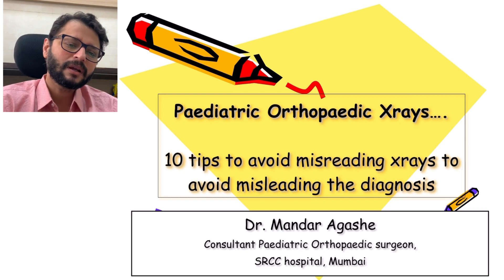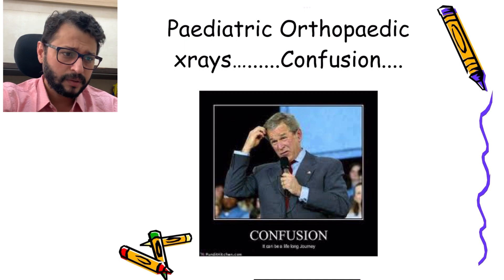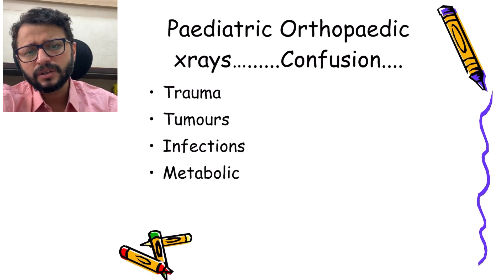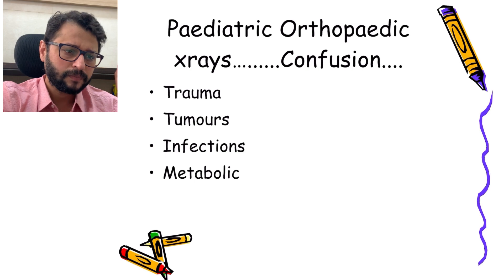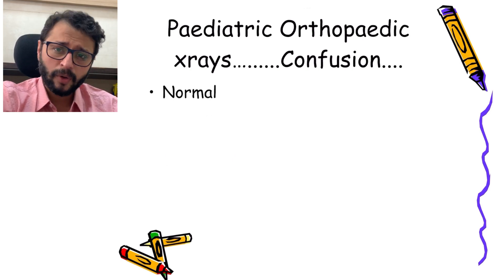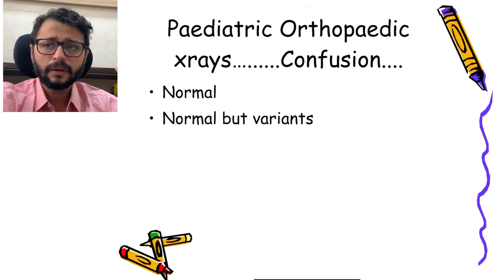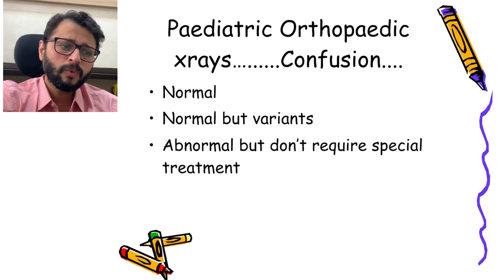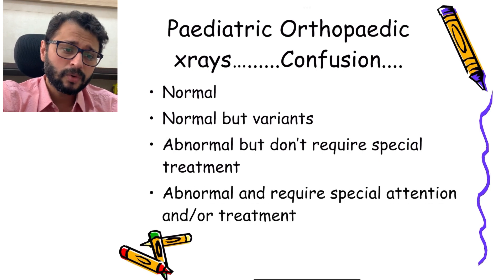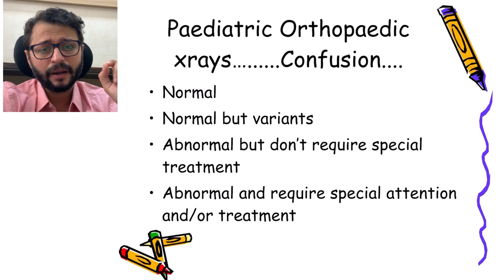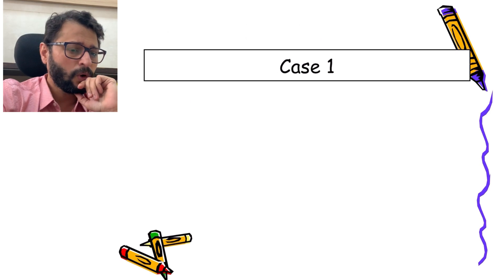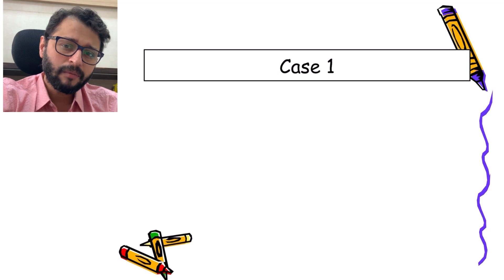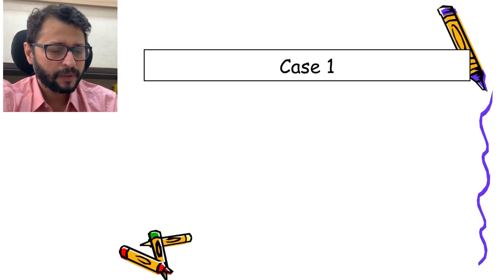Pediatric orthopedic x-rays are something which are completely confusing. There's a lot of confusion because it is related to trauma, tumors, infections, and metabolic causes — all of them have interchangeable views on x-rays. There may be x-rays which look abnormal but are actually normal, some which are variants of normalcy, some abnormal but not requiring treatment, and some which do require special treatment. I'll be going through a few case scenarios and putting forth 10 tips in avoiding misdiagnosis in pediatric orthopedic x-rays.